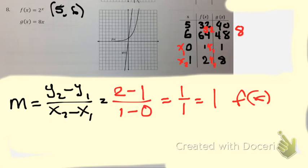So now let's do g of x. So g of x, now, we're going to have this be y1 and this be y2. So what's y2? 8 minus, what's y1? What's x2? Minus x1. So 8 minus 1. 1 minus 0.